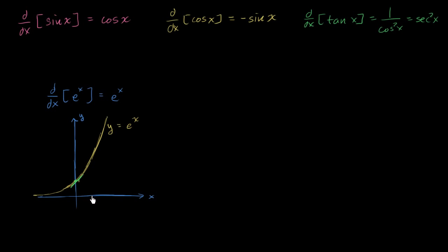If I go to x is equal to 1, right over here, the function evaluated here gets us e to the 1 power, or just e. And what's the slope of the tangent line right over here? It is also e.